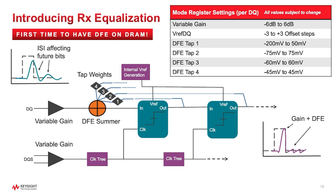The challenge for the user simulating is that there are so many parameters they're going to have control over, such as the variable gain. There are multiple steps specified in the spec, and all of these are still subject to change because the spec is still a draft. There's the VREF DQ, which can be adjusted to set the threshold voltage, and the individual DFE taps are all able to be adjusted as well. The key takeaway is that in order to find the most optimal equalization, we really need to use simulation and run a batch simulation to find the best settings.